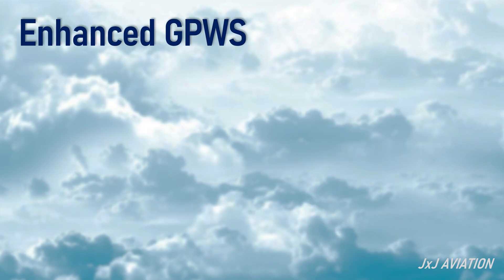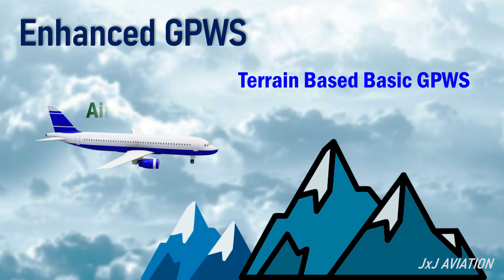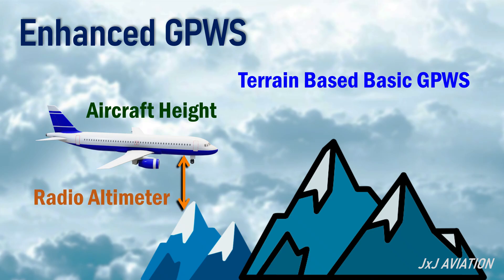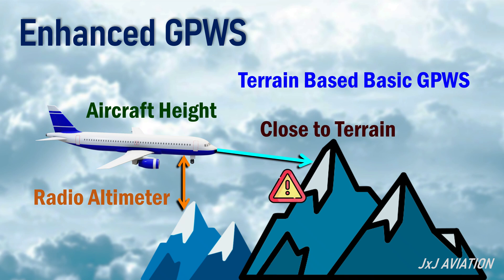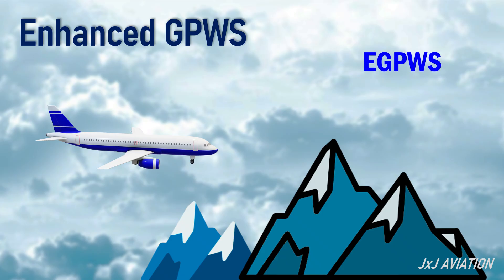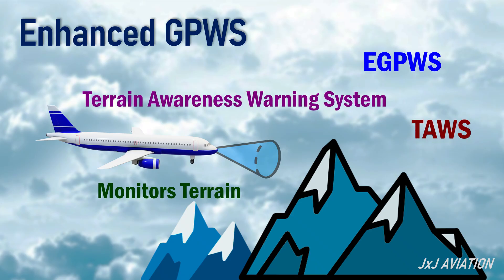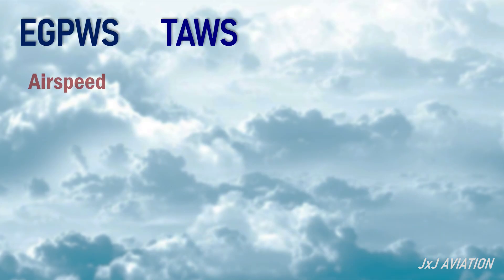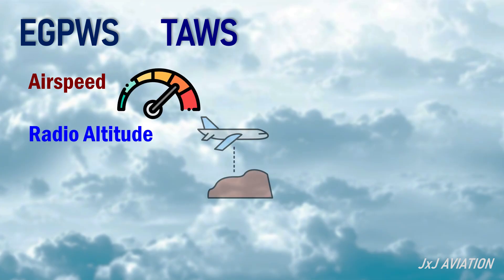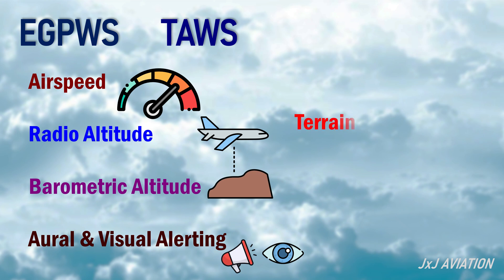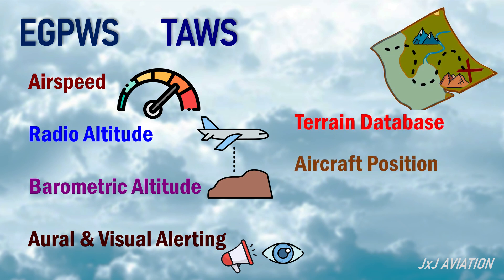Now let's look at the enhanced GPWS. The terrain-based basic GPWS alerts are triggered based on sudden aircraft height changes received from the radio altimeter. This could mean potential alerts are triggered when the aircraft would be very close to the terrain. The enhanced GPWS monitors terrain in front of the aircraft. This system may also be known as the Terrain Awareness Warning System, or TAWS. In addition to the system inputs required for basic GPWS, the EGPWS or TAWS uses a terrain database, aircraft position, and aircraft performance information.